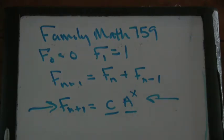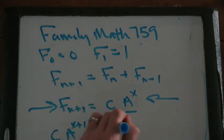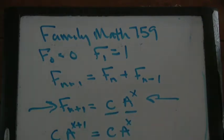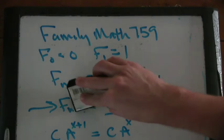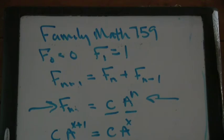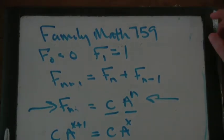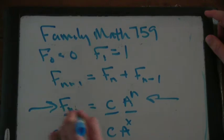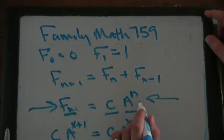Well, what would that mean? It means we would have a constant times a to the x plus 1 equals the same constant times a to the x. Sorry. I was very careless in how I was writing. F of n is a constant times a to the n.